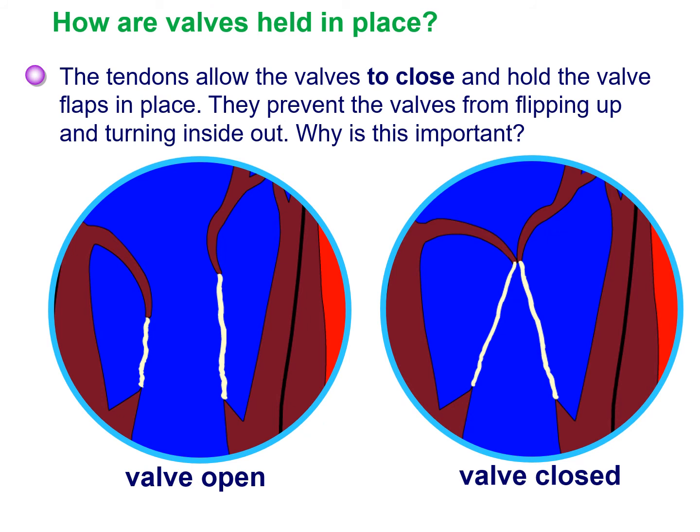The valves between the atrium and ventricles are connected to the inner walls of the heart by tough tendons, so they can't be forced past themselves and allow blood through. Here you can see a valve closed with the tendons pulled tight under some pressure, holding the blood in the area and stopping it from going back up into the atria.